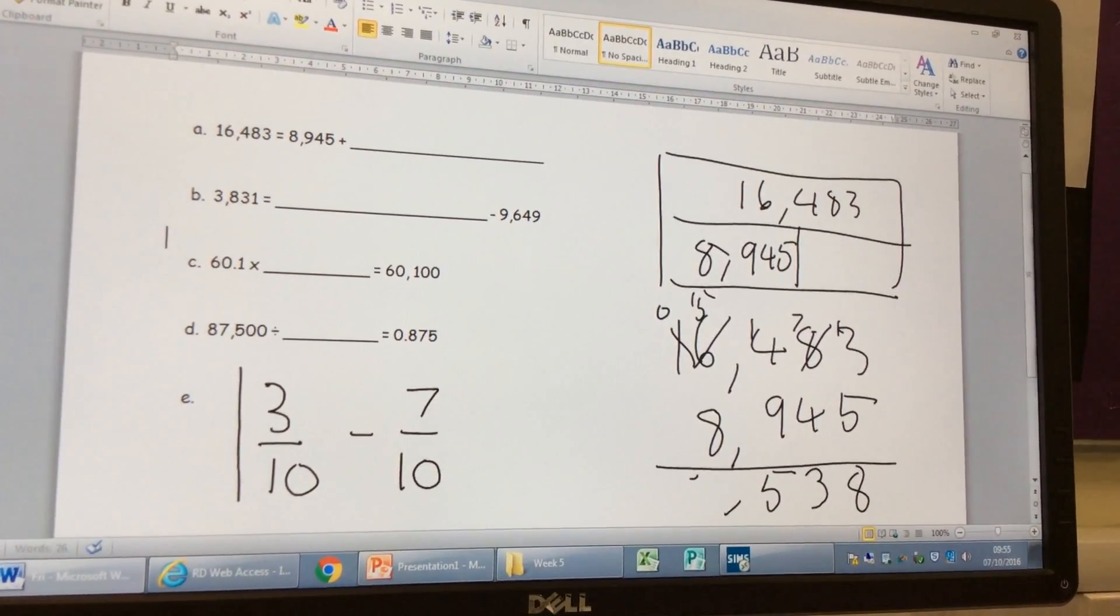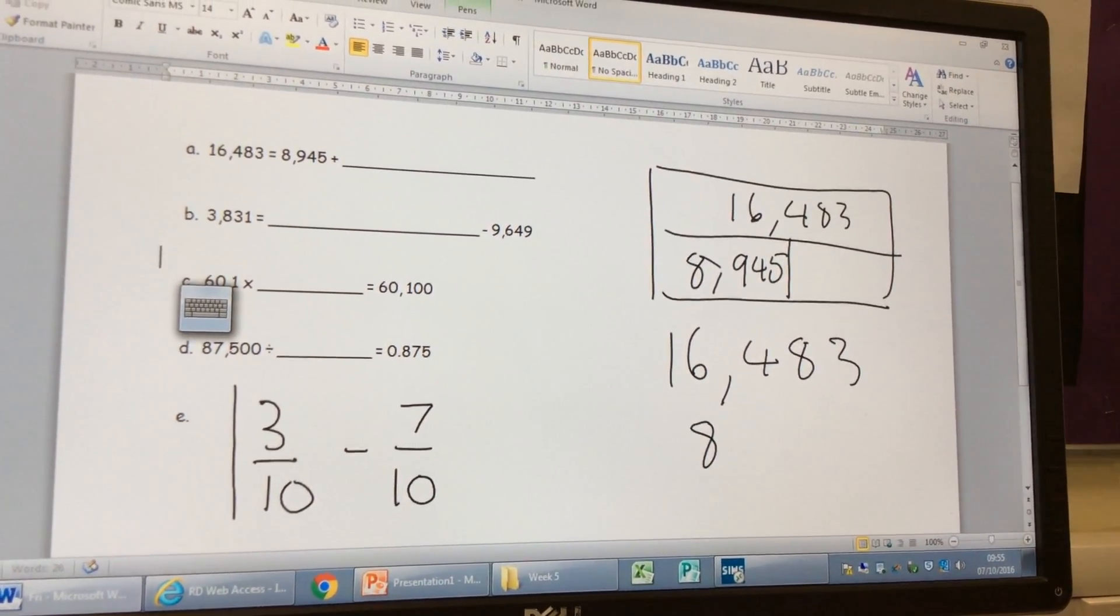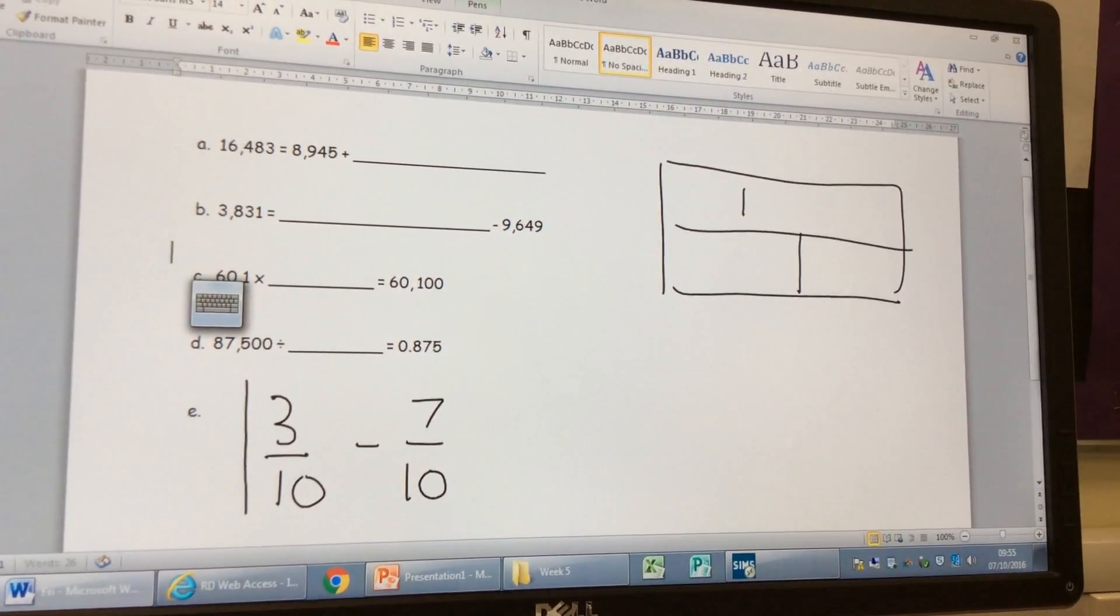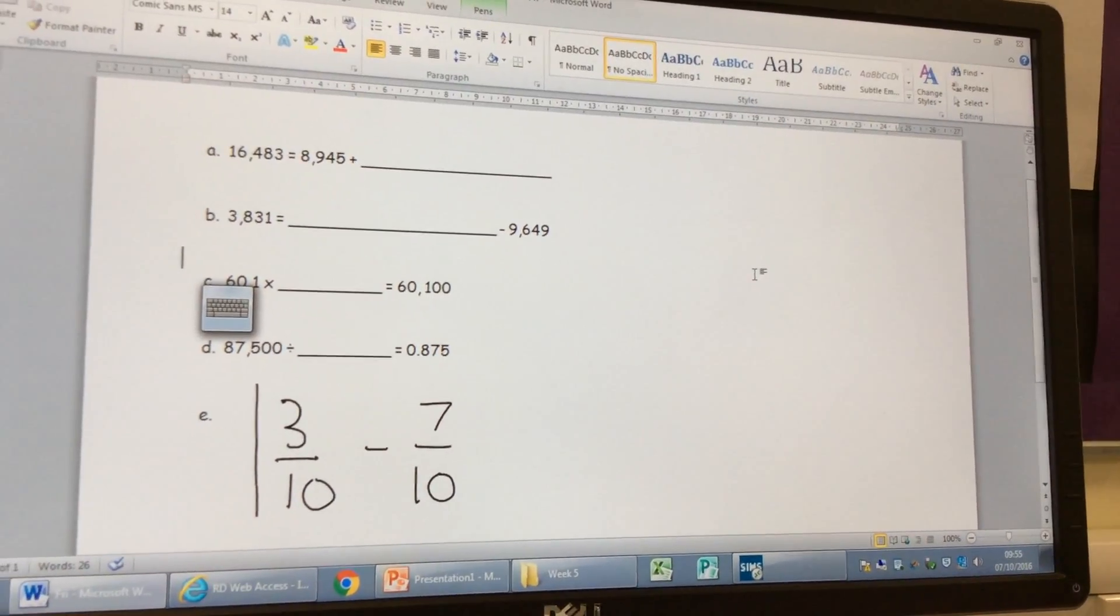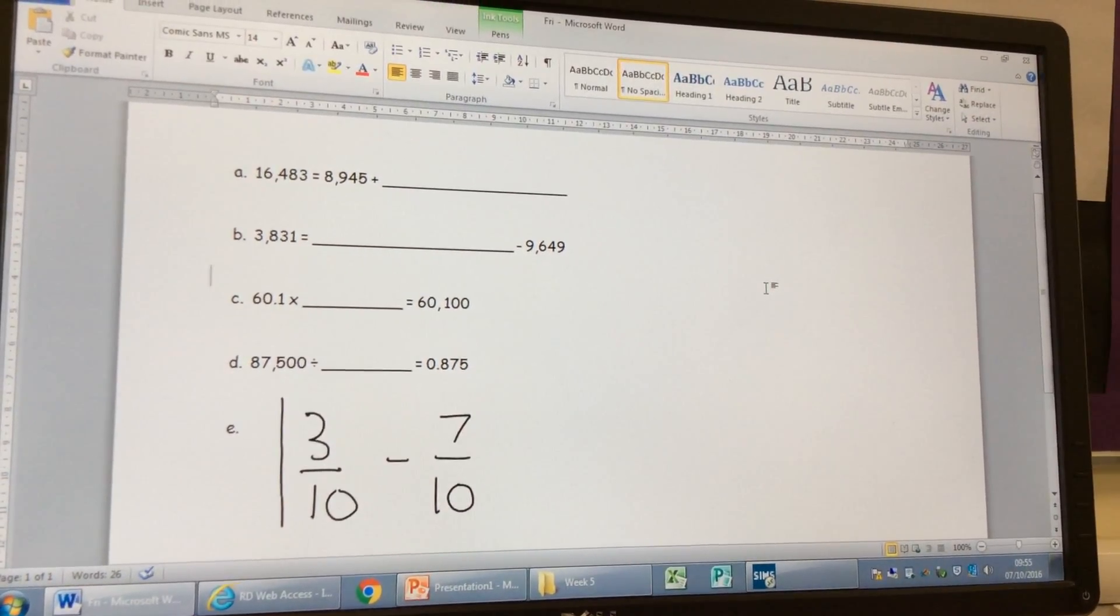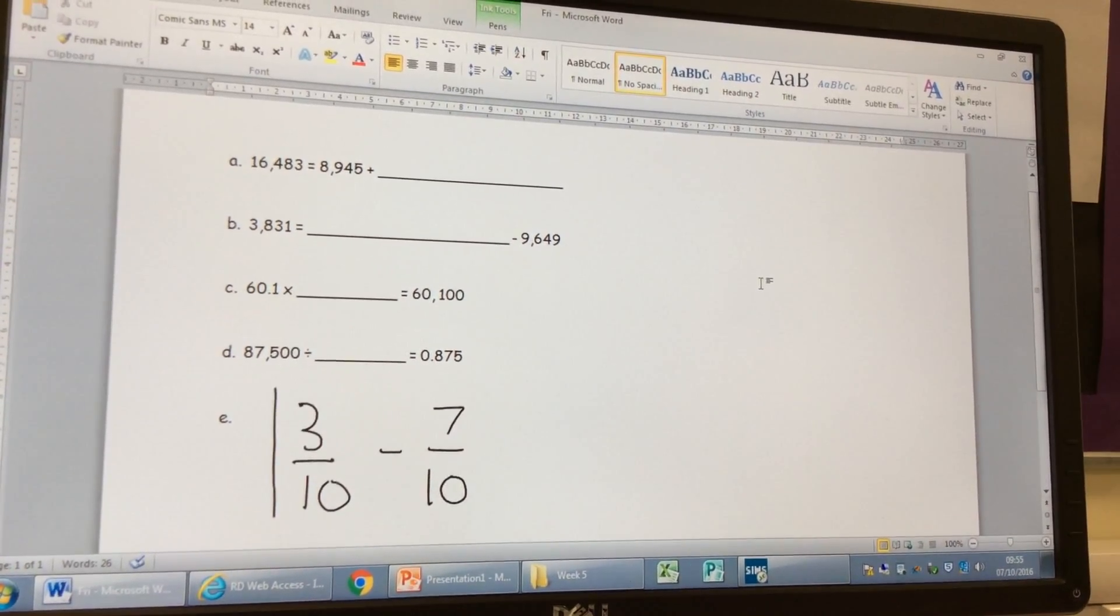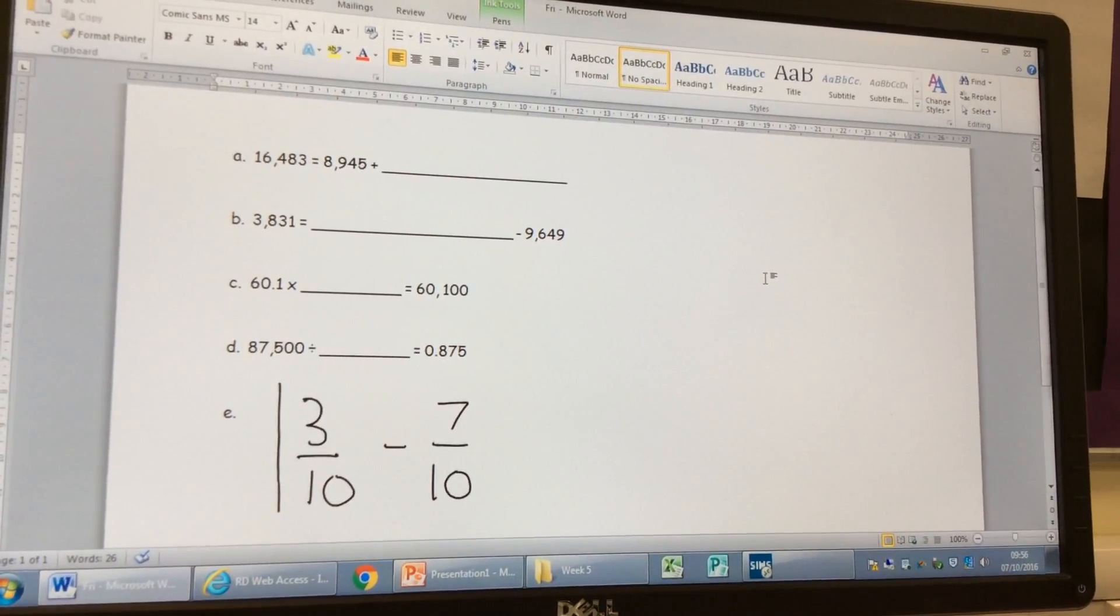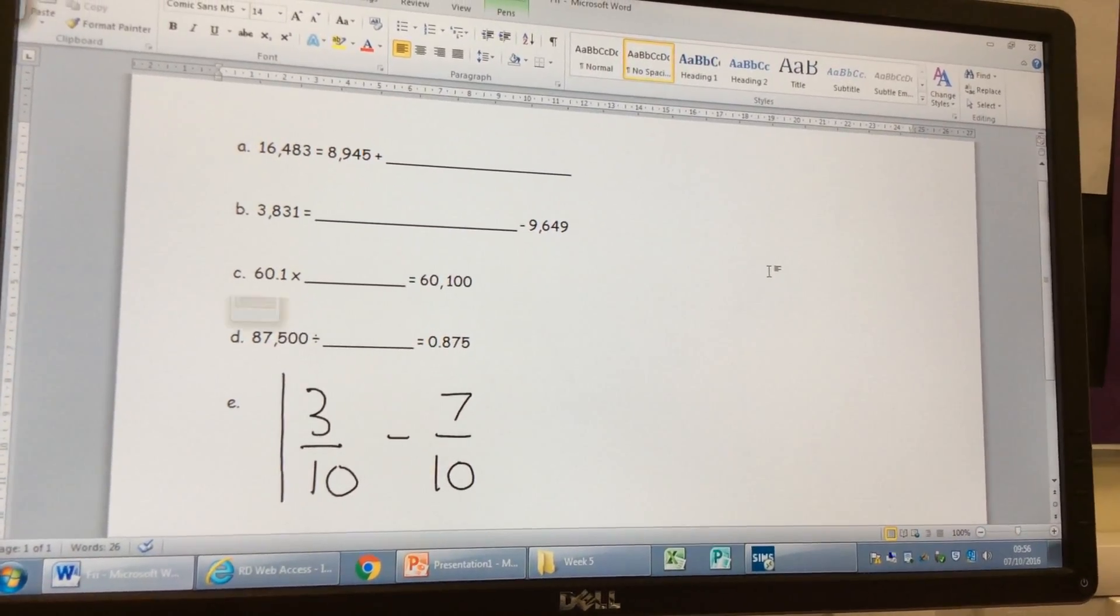Right, let's have a look at the next one then. So 3,831 equals something takeaway 9,649. Who'd like to tell me whether we're missing a part or a whole this time? Anthony. We're missing a whole. Right, come on Anthony, explain to me how you know we're missing a whole. Because the whole is always before the takeaway sign. Right, whole always goes before the takeaway sign, because when we do a takeaway, we have to take a part away to make a part as an answer. Good answer.